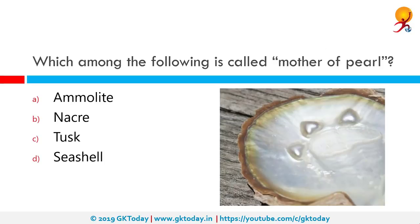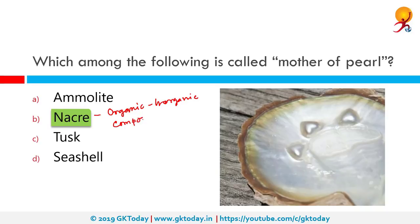Which among the following is called mother of pearl? The correct answer is Nacre. Nacre is an organic and inorganic composite material, meaning it is a mixture. It is produced by some mollusks as an inner shell lining and also makes up the outer coating of pearls. The harder outer coating of pearls is made of this. It is strong, resilient and iridescent.